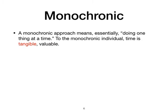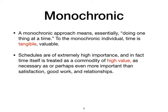The monochronic concept of time — what it is, how we can understand the cultures associated with it, and what it values more. Is it group-oriented or individual-oriented? The monochronic approach means essentially doing one thing at a time. To the monochronic individual, time is tangible and valuable — schedules are of extreme importance, and in fact time is treated as a commodity of high value.